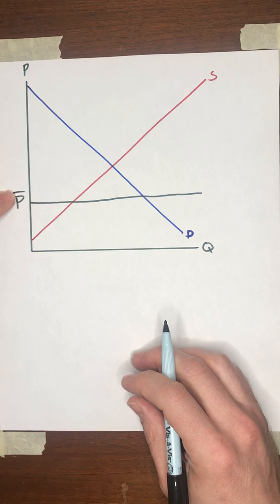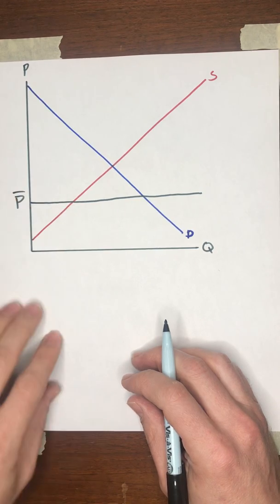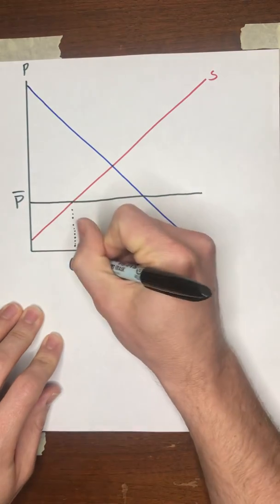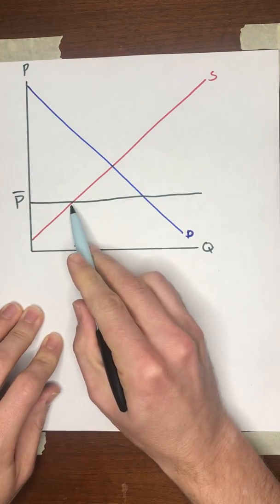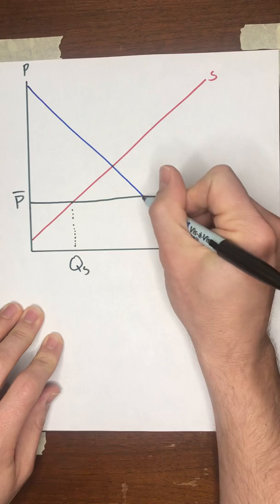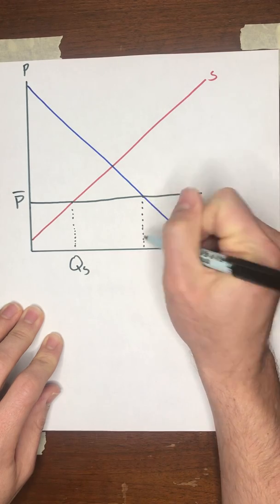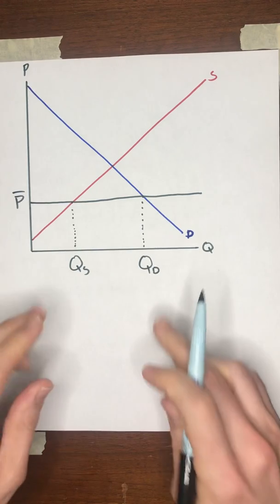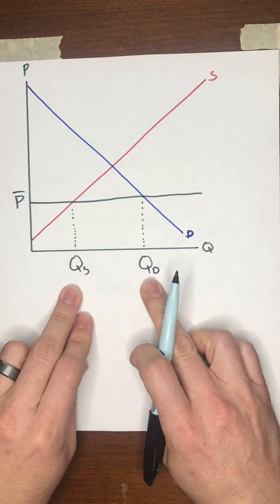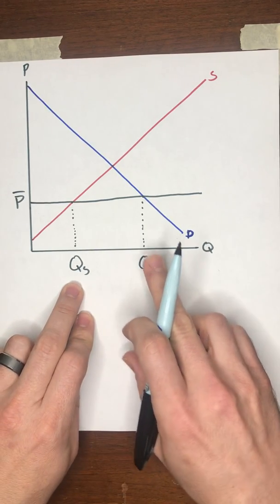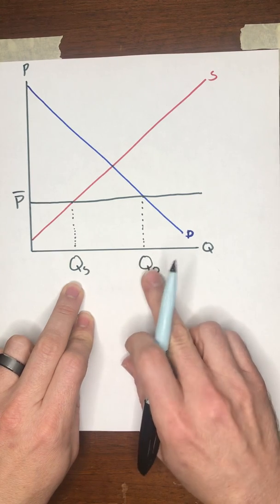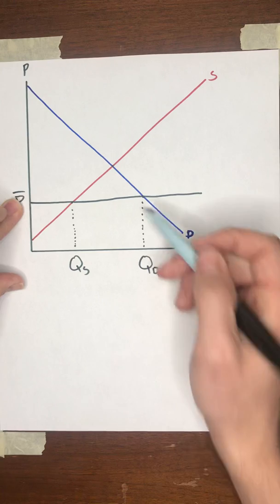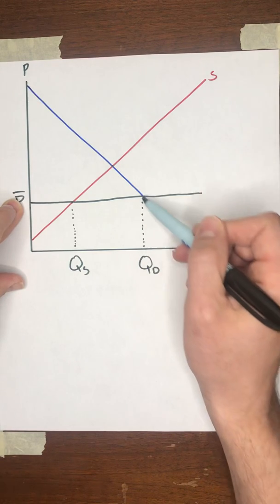Notice that where P bar hits the supply curve, that's going to give us the quantity of units supplied by the sellers. And where P bar hits the demand curve, that tells us the quantity of units that will be demanded by the buyers. And notice that we're not in a case of equilibrium anymore. Now the buyers want to buy a lot more units than the sellers do. Why? Well, because the price is so low, that's an attractive price to a lot of buyers.